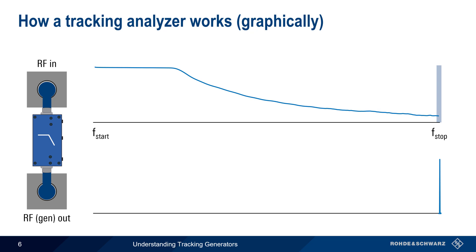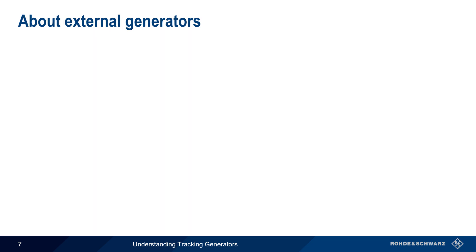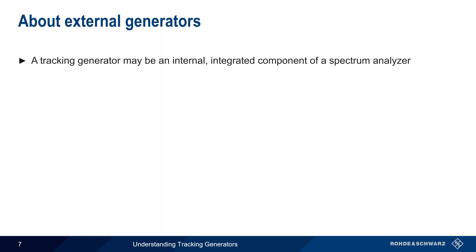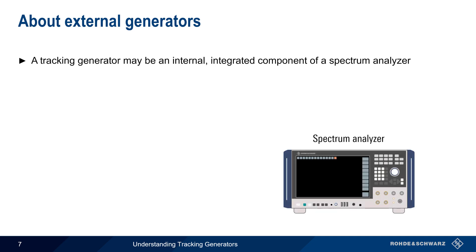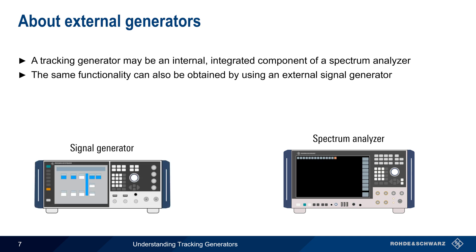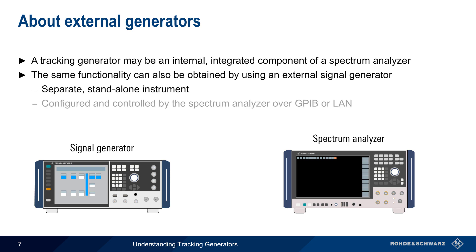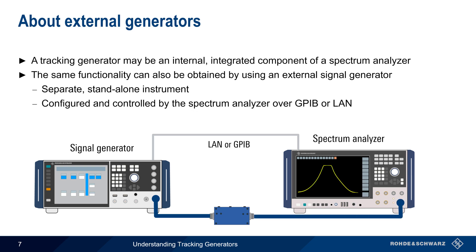Network measurements made using a tracking generator are often sufficient for many basic RF applications. Tracking generators may be an internal, integrated component of a spectrum analyzer, but this functionality can also be obtained using an external signal generator as a source. This separate, standalone instrument is controlled and configured by the spectrum analyzer, typically over a GPIB or LAN connection. This allows synchronization of the generator output and analyzer measurement sweep, enabling the same types of measurements as those made with an internal, integrated tracking generator.